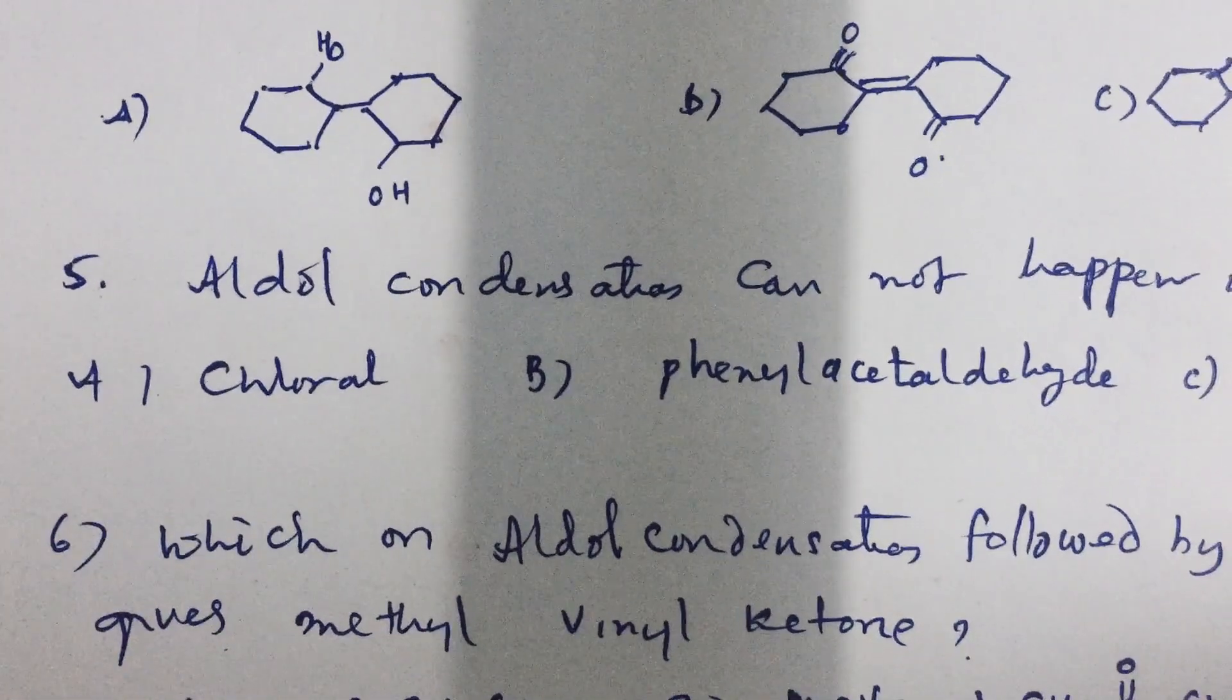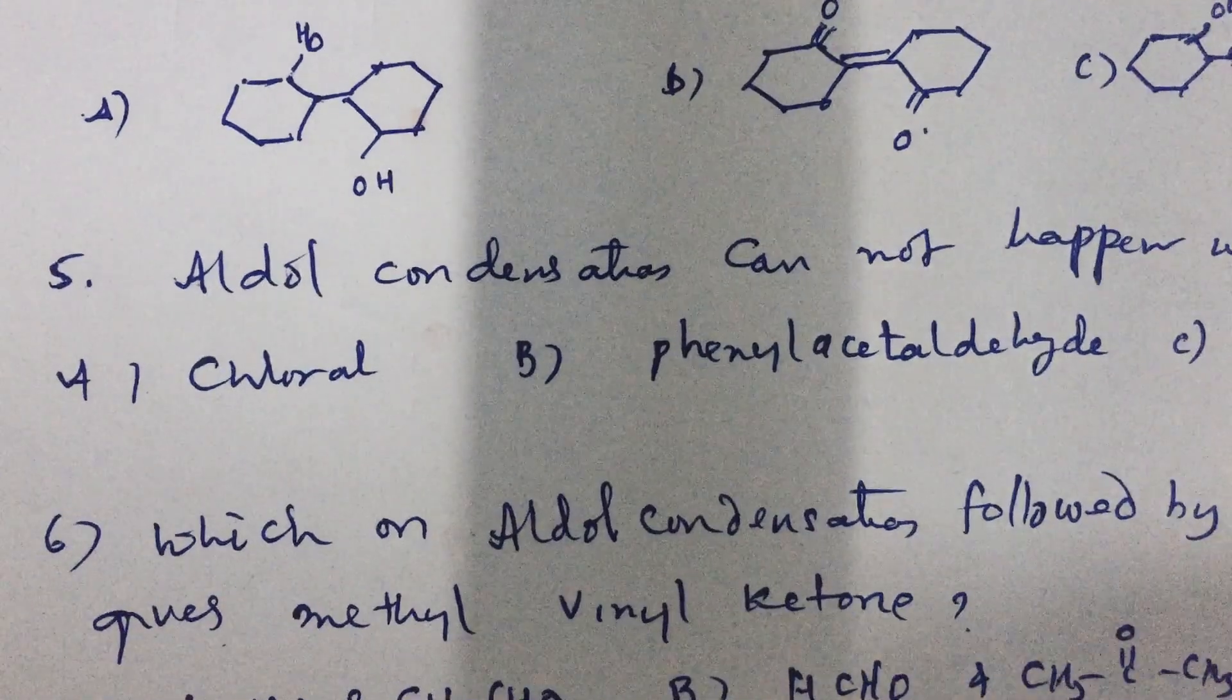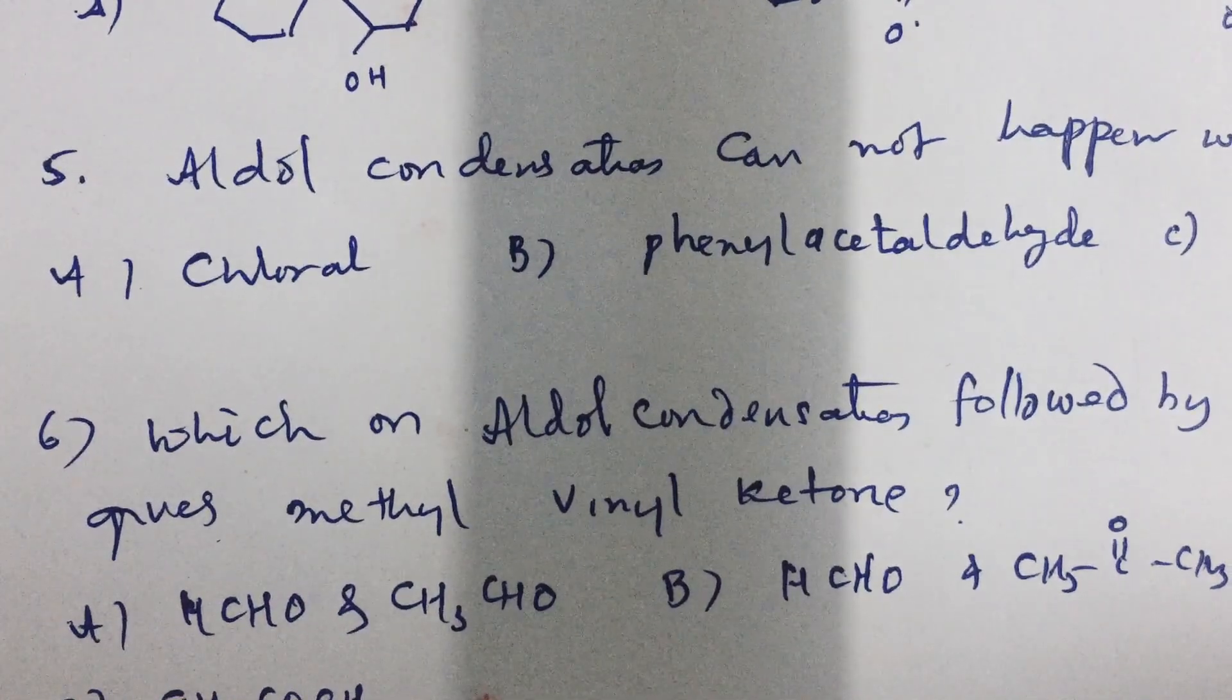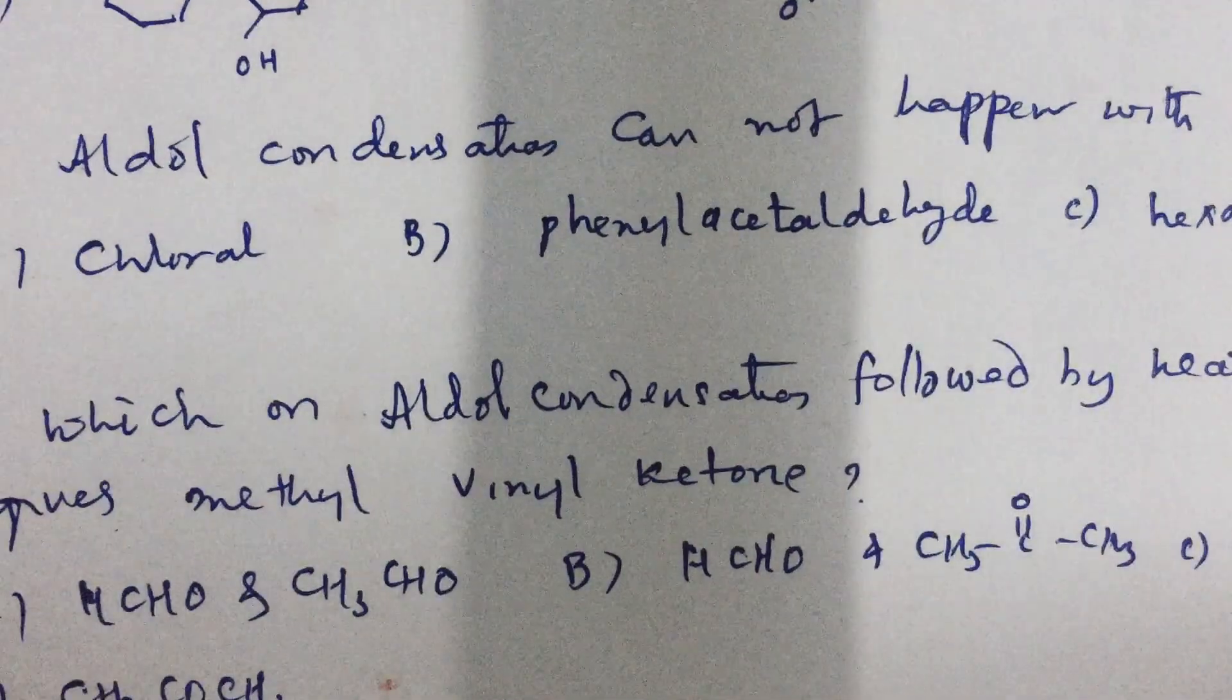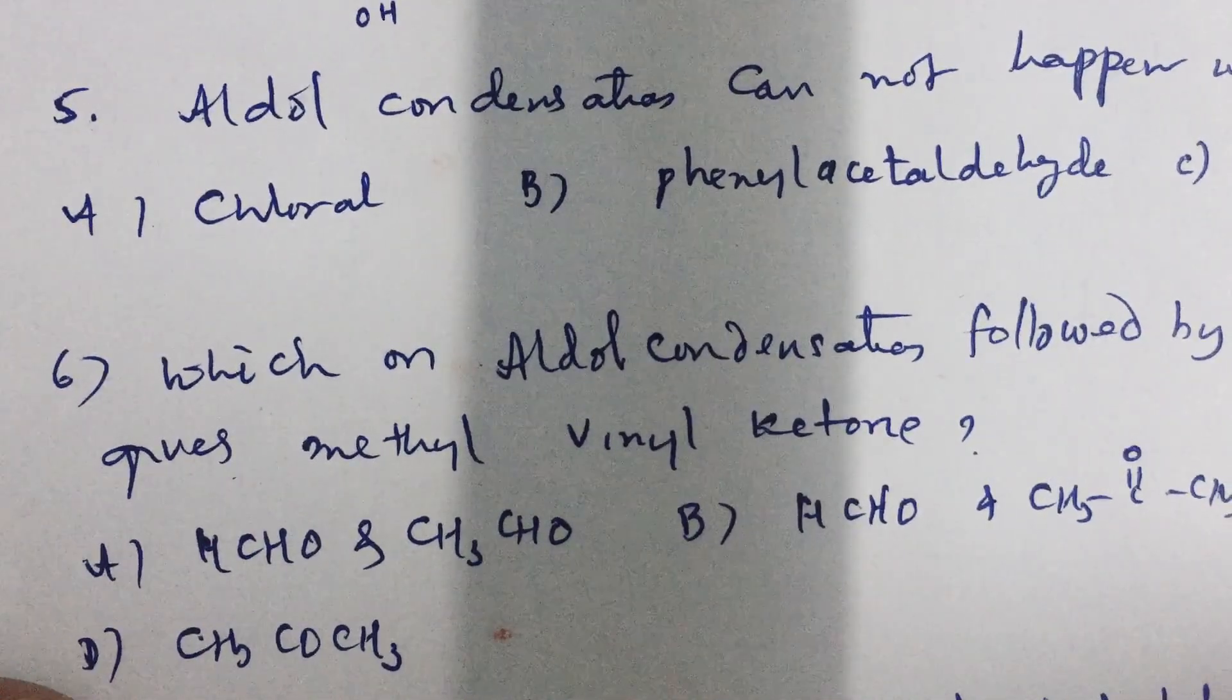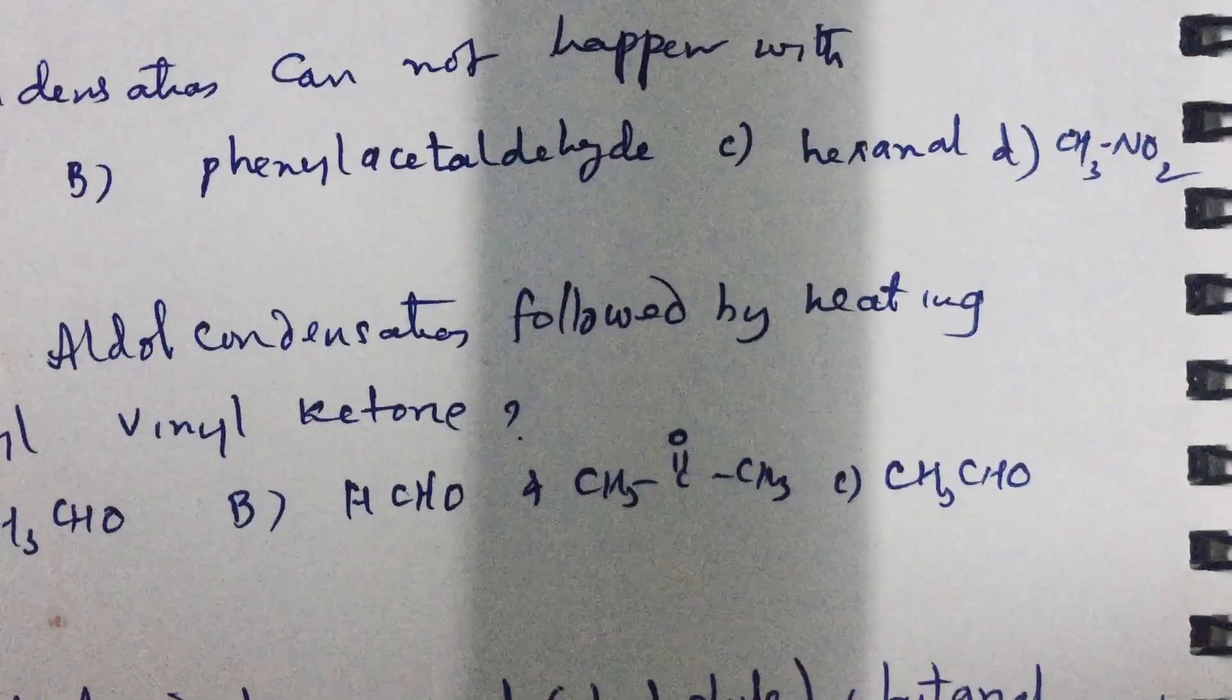Next, which on aldol condensation followed by heating gives methyl vinyl ketone? A careful observation can reveal you what is the answer to this question number 6. Answer to this question 6, if you carefully see, appears to be, it can't be, it must be B. Do you know why? Try to work out the reaction with A. You will get a product with 3 carbons. The methyl vinyl ketone has total 4 carbons. A cannot be the answer. B can be the answer.